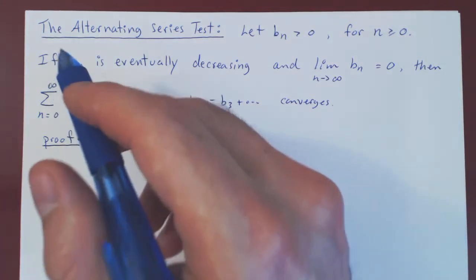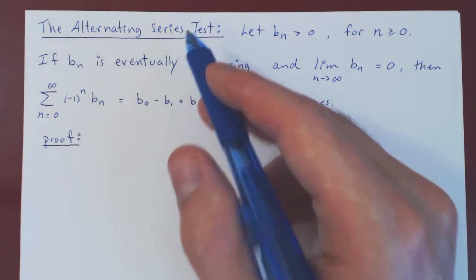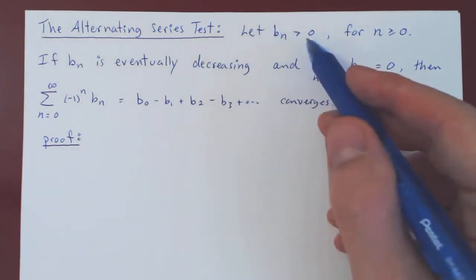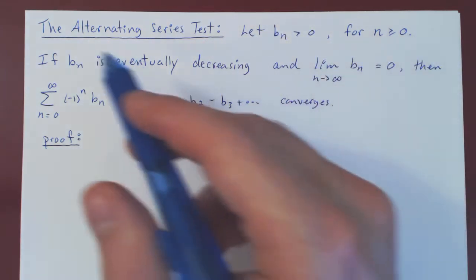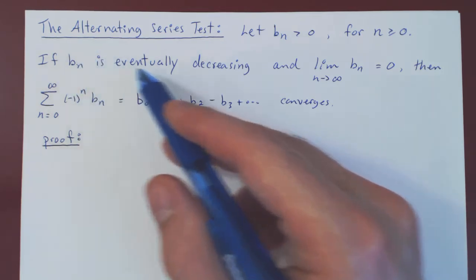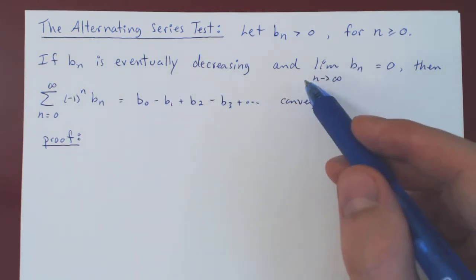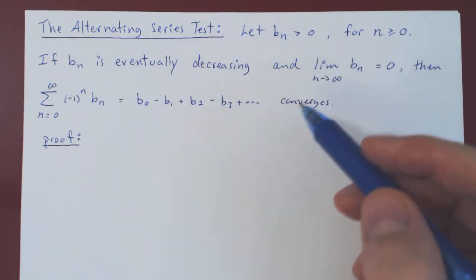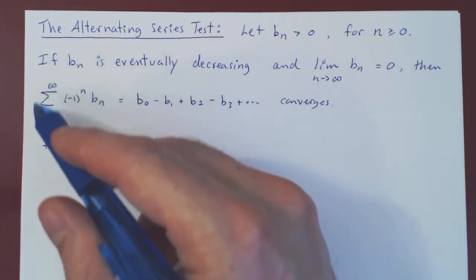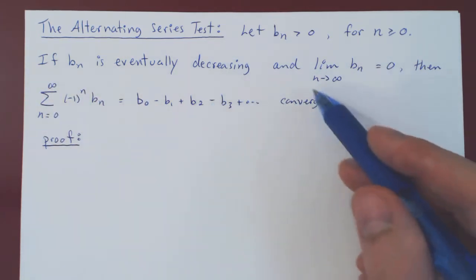In this video, we will prove the alternating series test. If you recall, we assume that we have a positive sequence Bn, and if Bn is eventually decreasing, and the limit of Bn as n tends to infinity is equal to 0, then the corresponding alternating series converges.